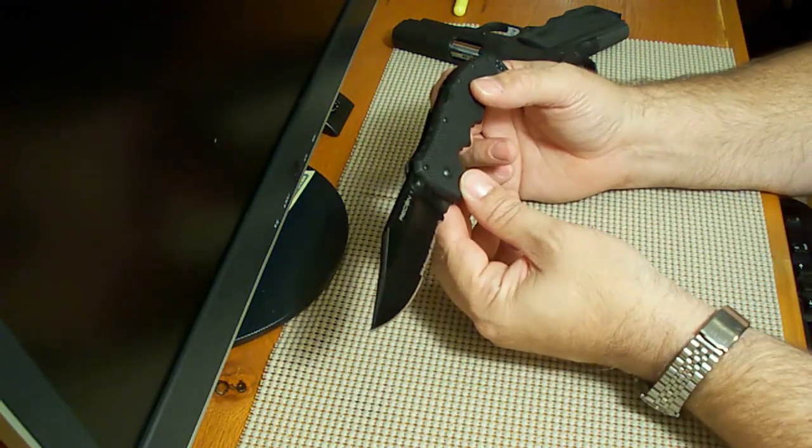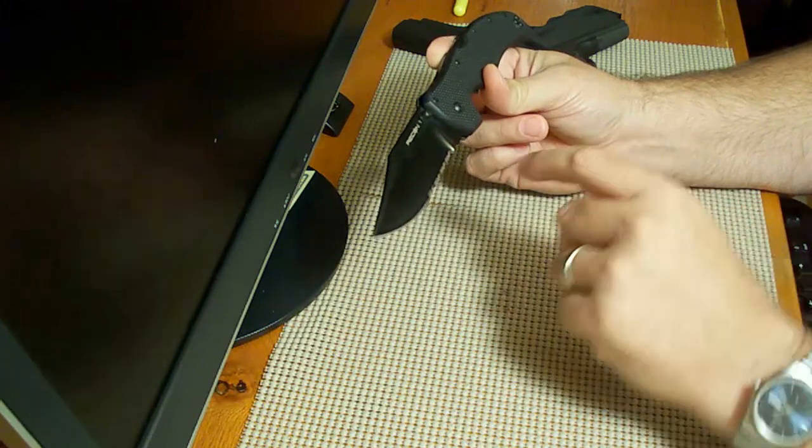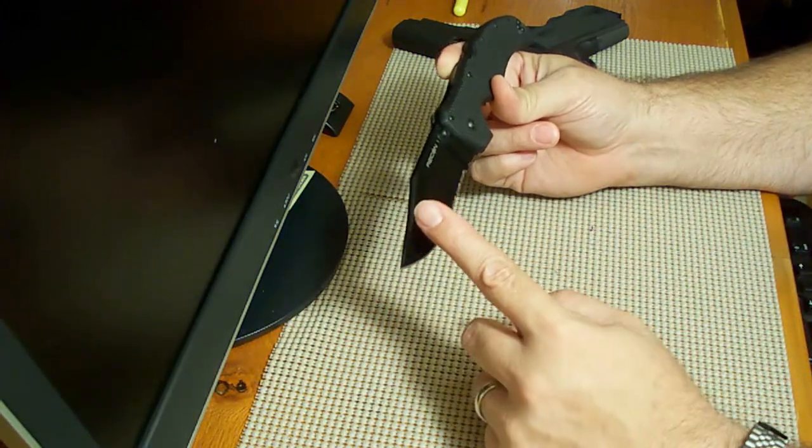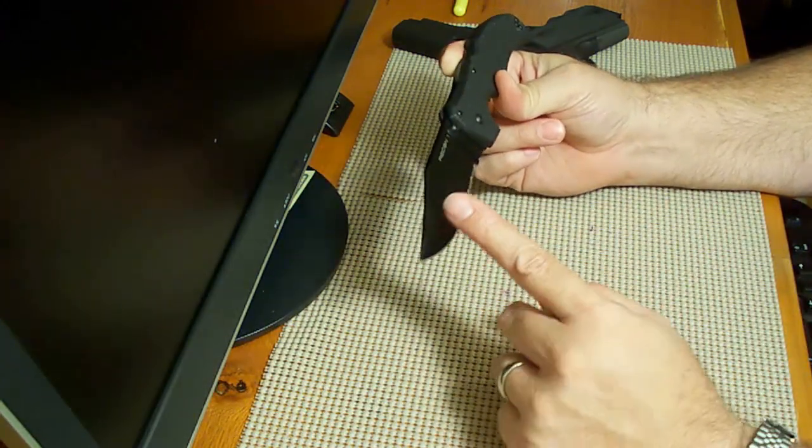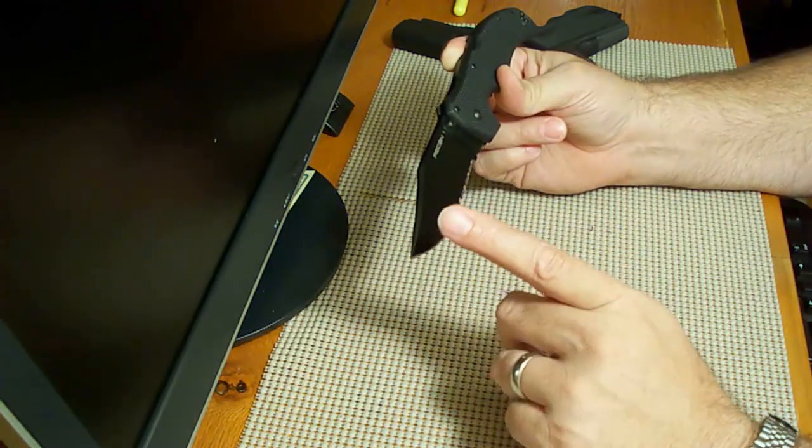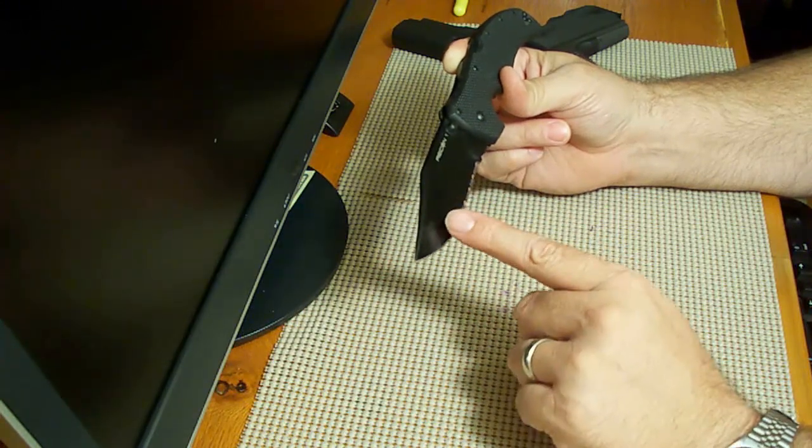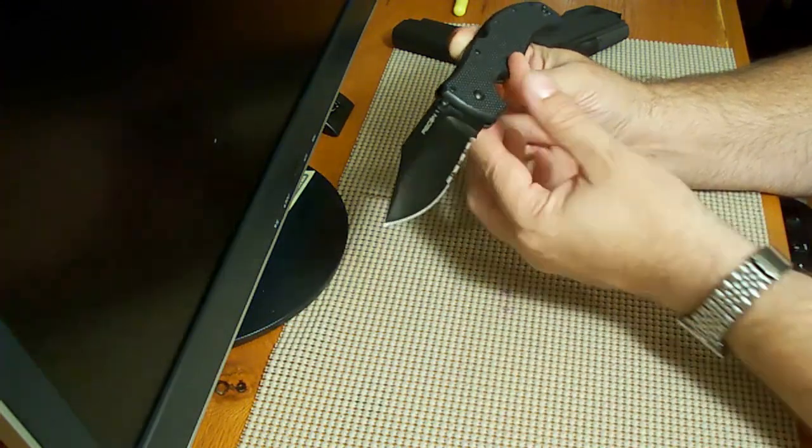This knife is made by Cold Steel and it is called a Recon One model. You can get it in a clip point and you can also get it in that tanto blade type. You can get both the clip one and the tanto in full straight blade or half blade and half serrated.